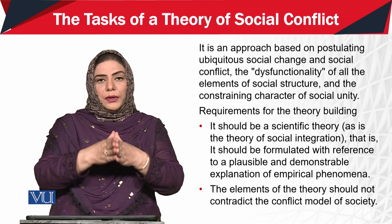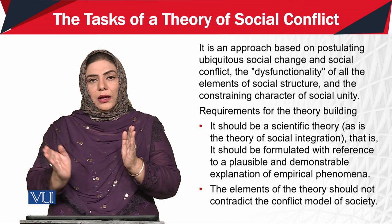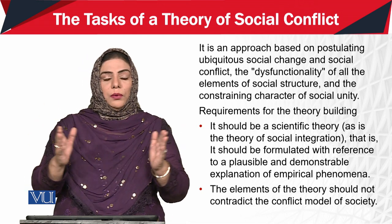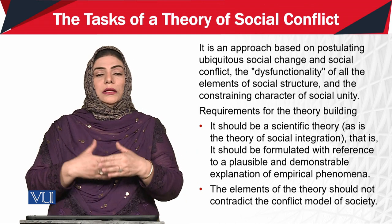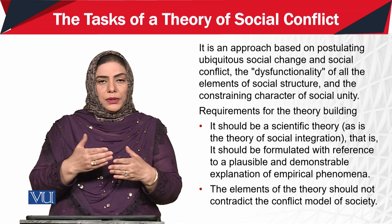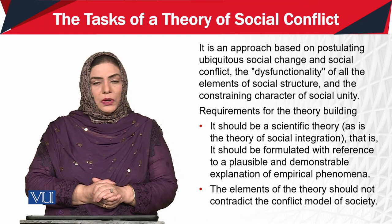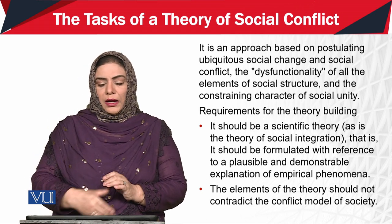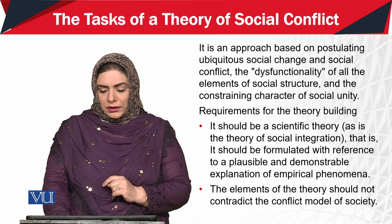Social conflict की जो theory है उसके लिए empirical evidence चाहिए। क्या जब जब भी social change और social conflict के दर्मियान कोई ऐसा मरहला आएगा जहां लोगों के दर्मियान cooperation नहीं होगा, consensus नहीं होगा — क्या हर दफ़ा सूरते-हाल एक ही तरफ जाएगी? जब तक बहुत सारी empirical evidences मौजूद नहीं होंगी, हम यह नहीं कह सकते — because the elements of the theory should not contradict the conflict model of society.